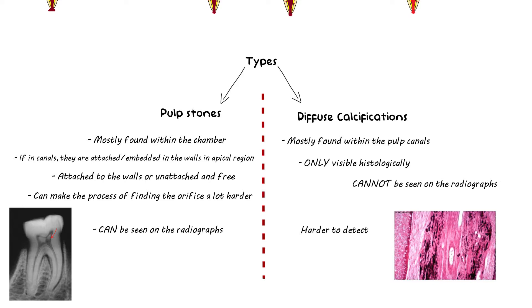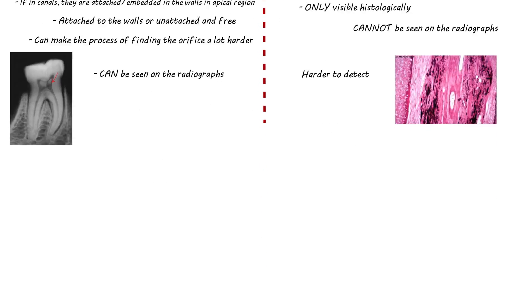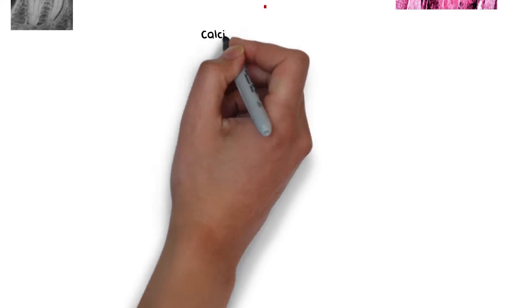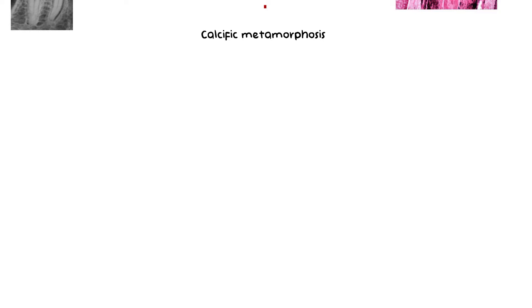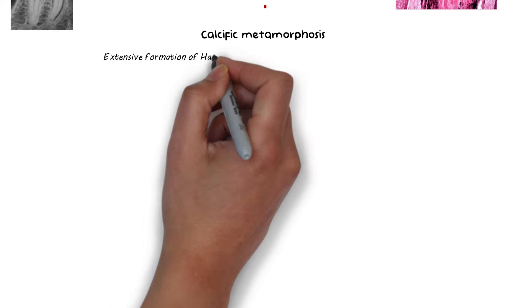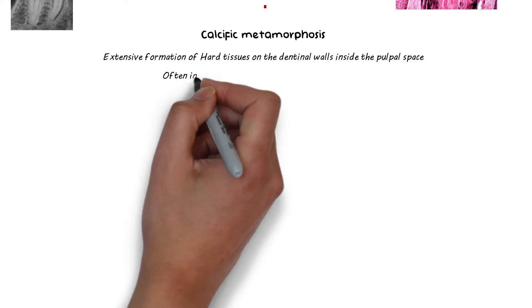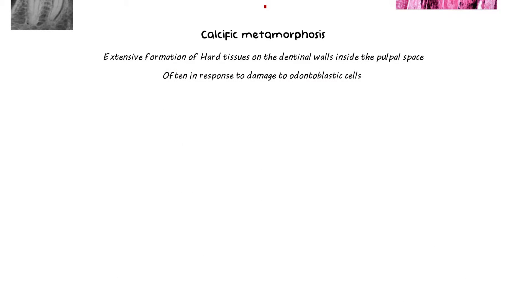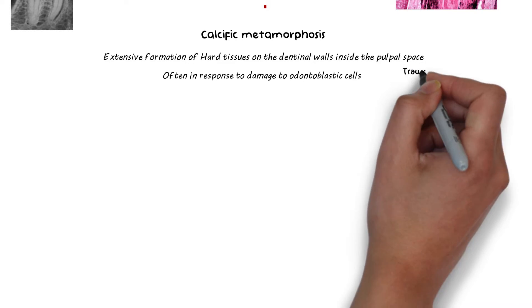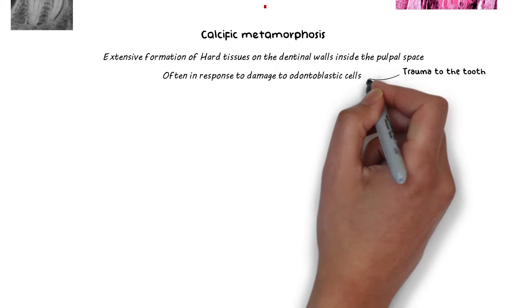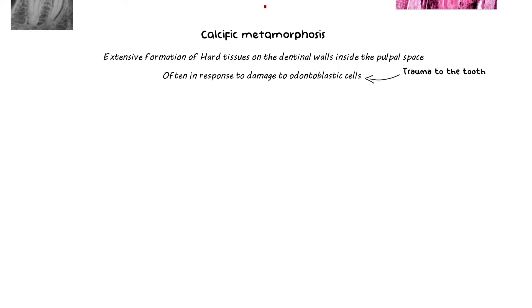There is also another type of calcification known as calcific metamorphosis, in which there is an extensive formation of hard tissues on the dentinal walls beside the pulpal space, which is often in response to irritation or death and replacement of the odontoblastic cells. Hence the most common cause of calcific metamorphosis is trauma due to accidental injury, especially in young individuals.